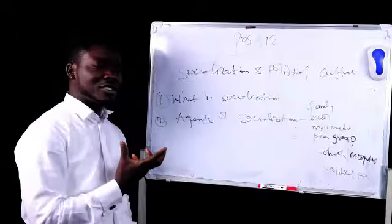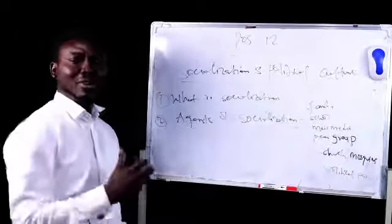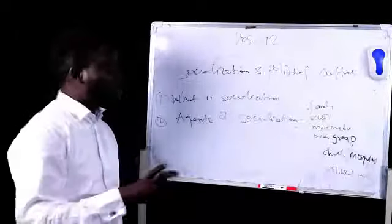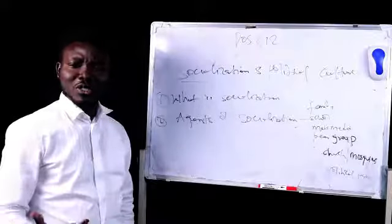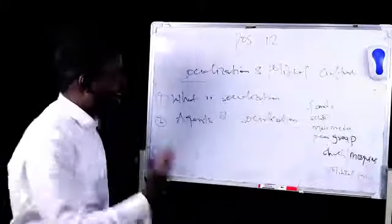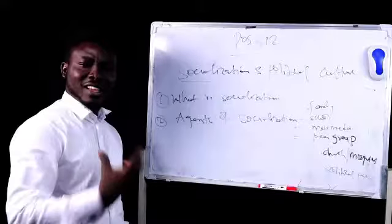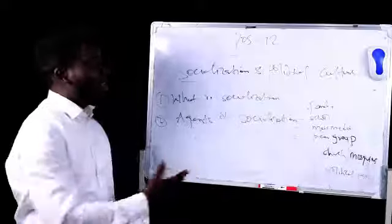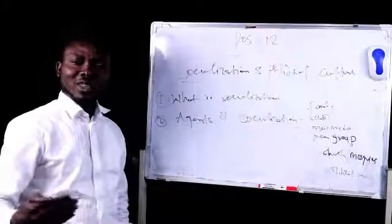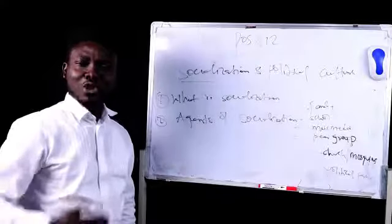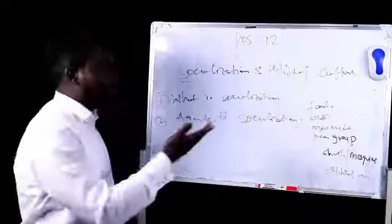Another agent of socialization is the school. The school is a moral building block. The school is a formal institution responsible for transmitting knowledge onto people. And so the school becomes an agent of political socialization. Today in our schools, we do civic education as a topic or as a subject. They do government, they do history, we do economics. All this knowledge is meant to socialize people, to socialize children as they grow. And so the school plays a very important role as far as the transmission of knowledge, the transmission of culture, the transmission of values, the transmission of belief system is concerned.